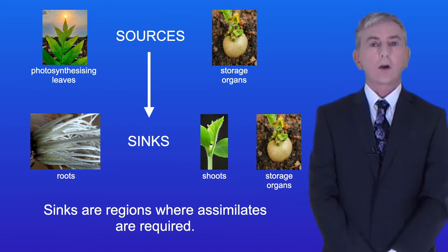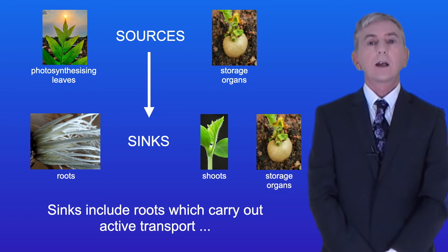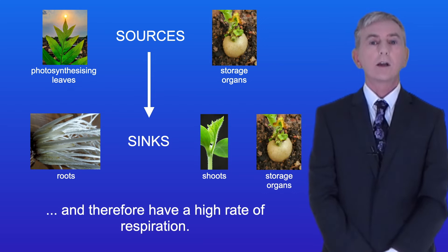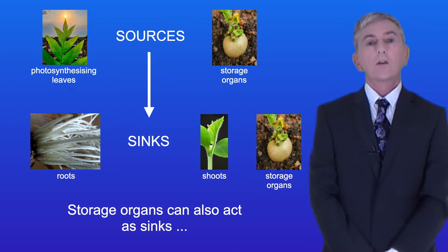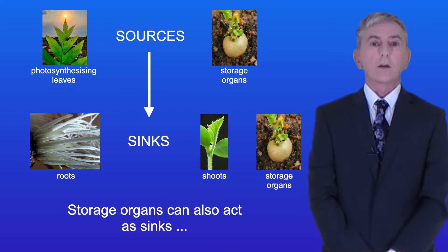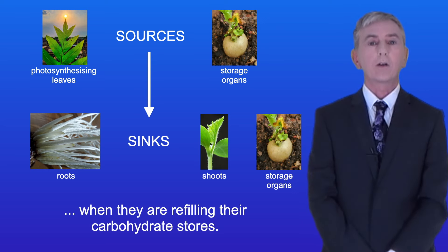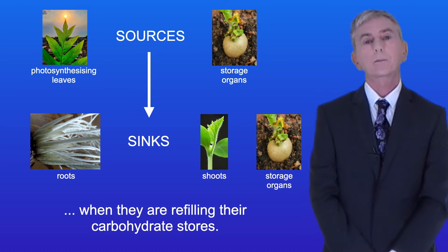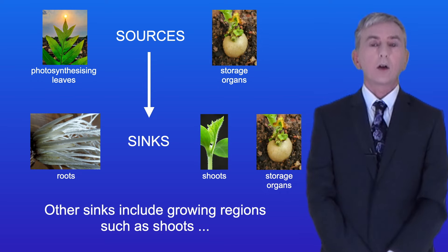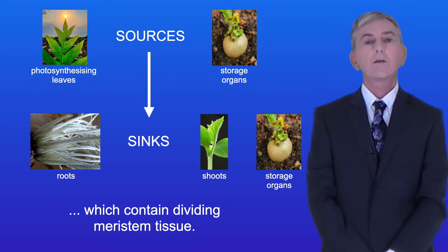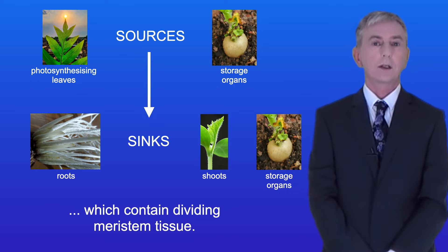Sinks are regions where assimilates are required. Sinks include roots which carry out active transport and therefore have a high rate of respiration. Storage organs can also act as sinks when they're refilling their carbohydrate stores. Other sinks include growing regions such as shoots which contain dividing meristem tissue.